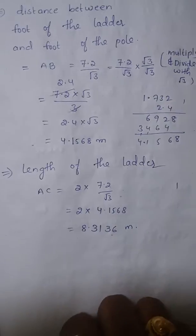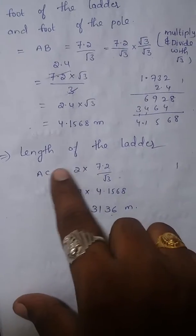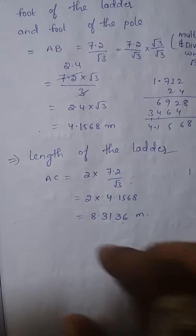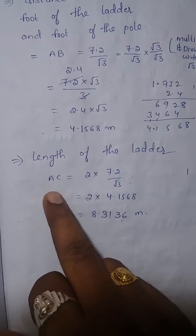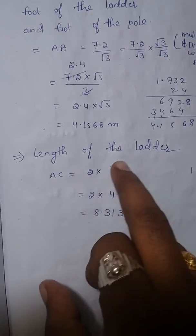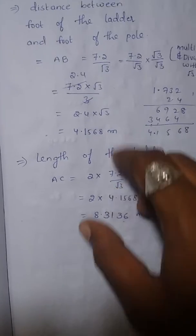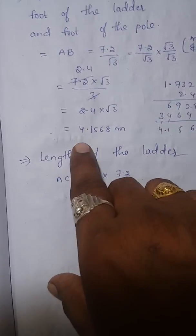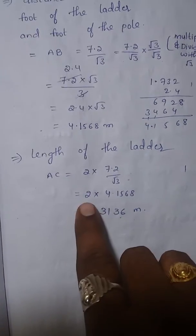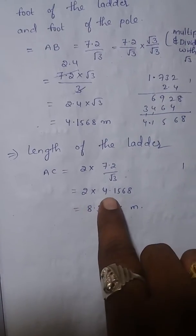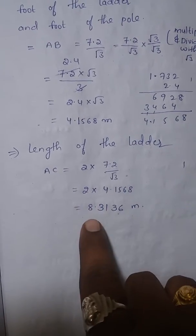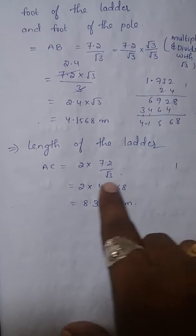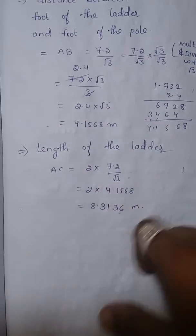Now we calculate the length of the ladder. AC = 2 × 7.2 / √3. We already calculated 7.2 / √3 = 2.4√3 ≈ 4.1568, so AC = 2 × 4.1568 = 8.3136 meters. This is the length of the ladder.